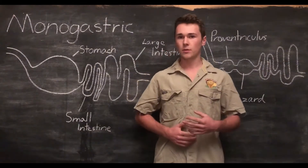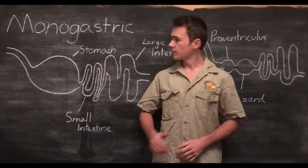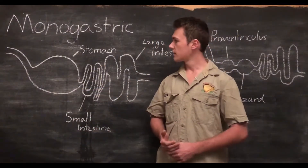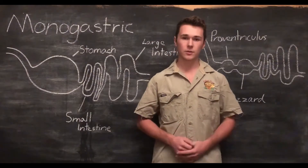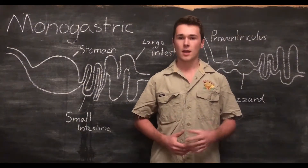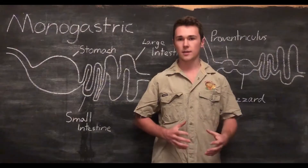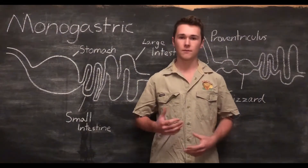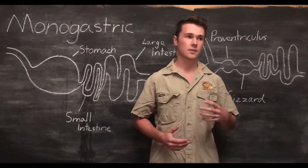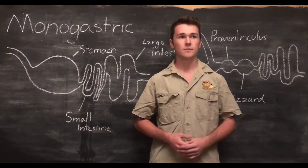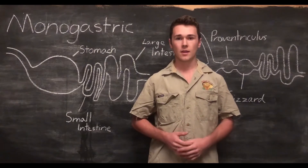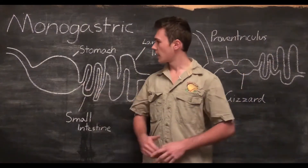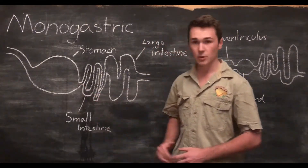Food passes through the oesophagus and into the stomach. Contained in the stomach are gastric fluids, which contain enzymes and hydrochloric acid. These break down proteins and carbohydrates into more basic and fundamental units such as amino acids and simple sugars. The food is broken down in the stomach and then moves into the small intestines.